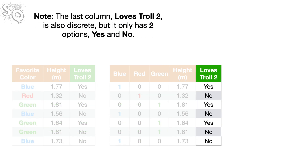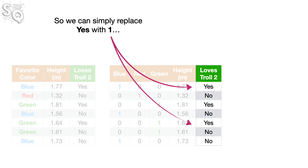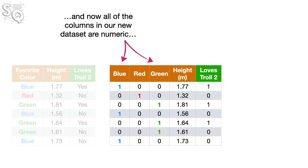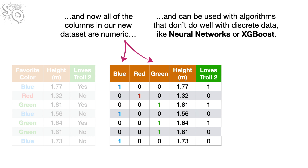Note, the last column, Love's Troll 2, is also discrete, but it only has two options, Yes and No. So we simply replace Yes with 1, and No with 0. And now all of the columns in our new dataset are numeric, and can be used with algorithms that don't do well with discrete data, like neural networks or XGBoost.